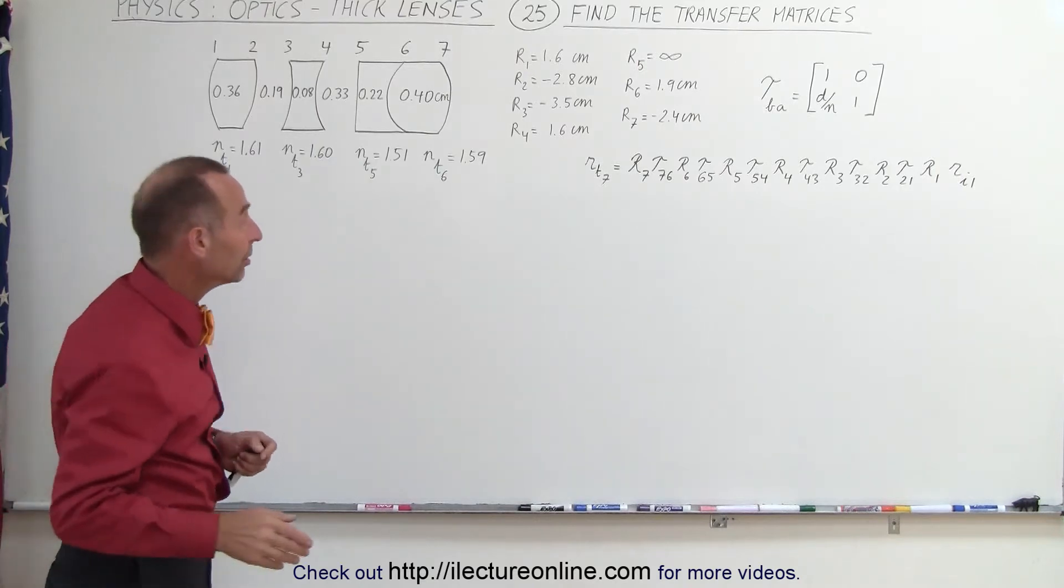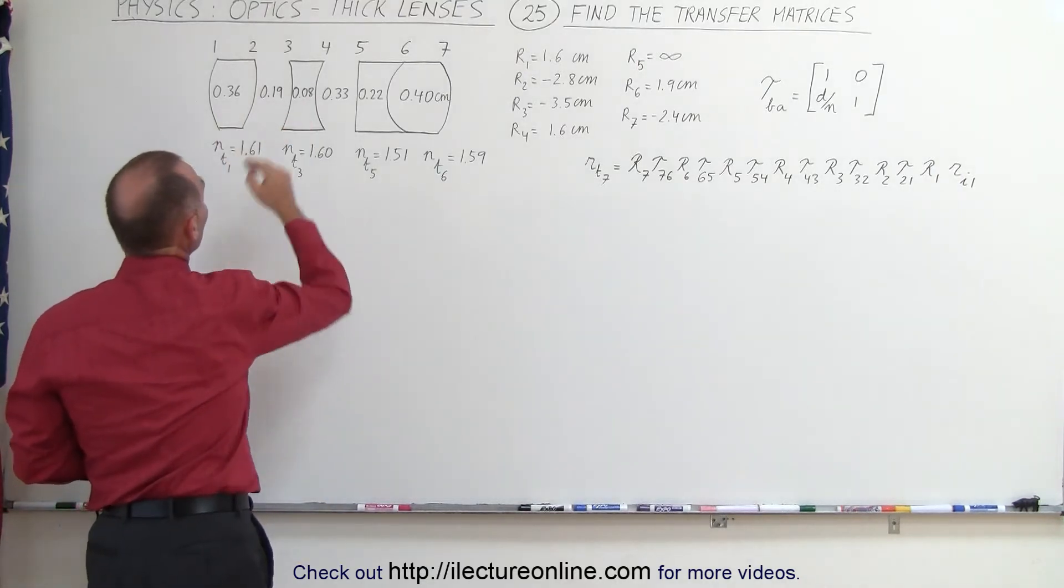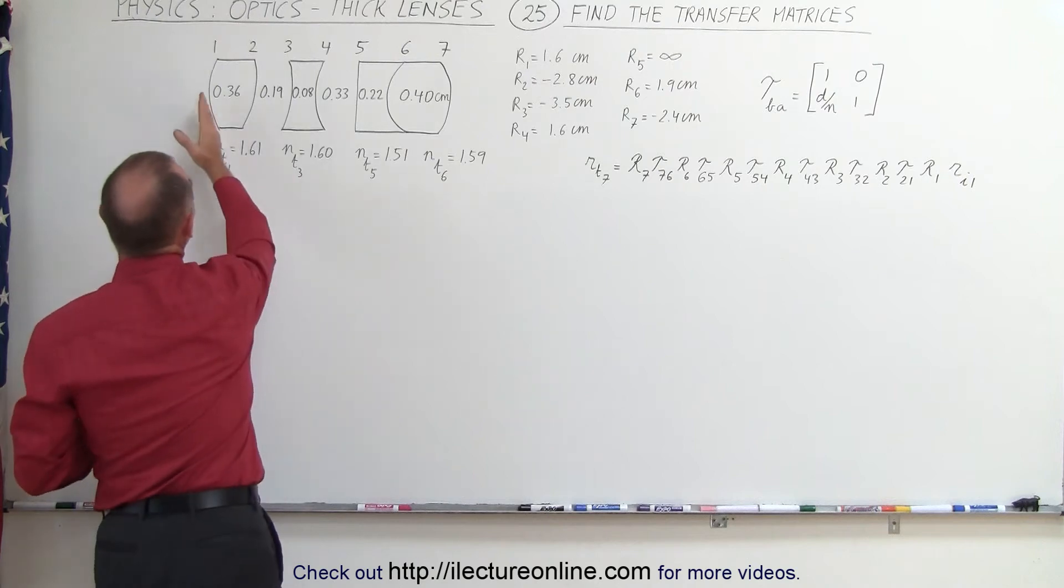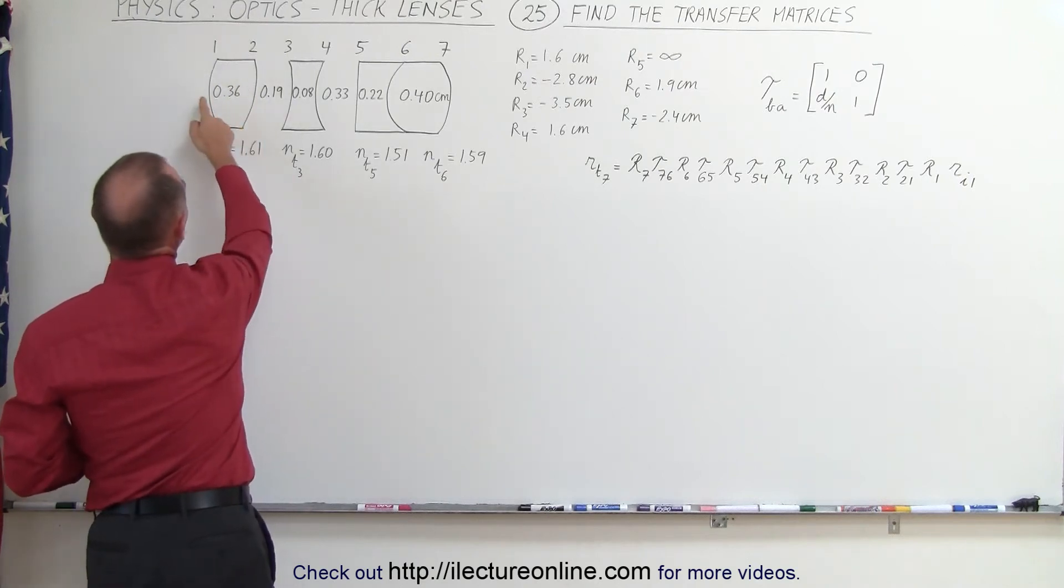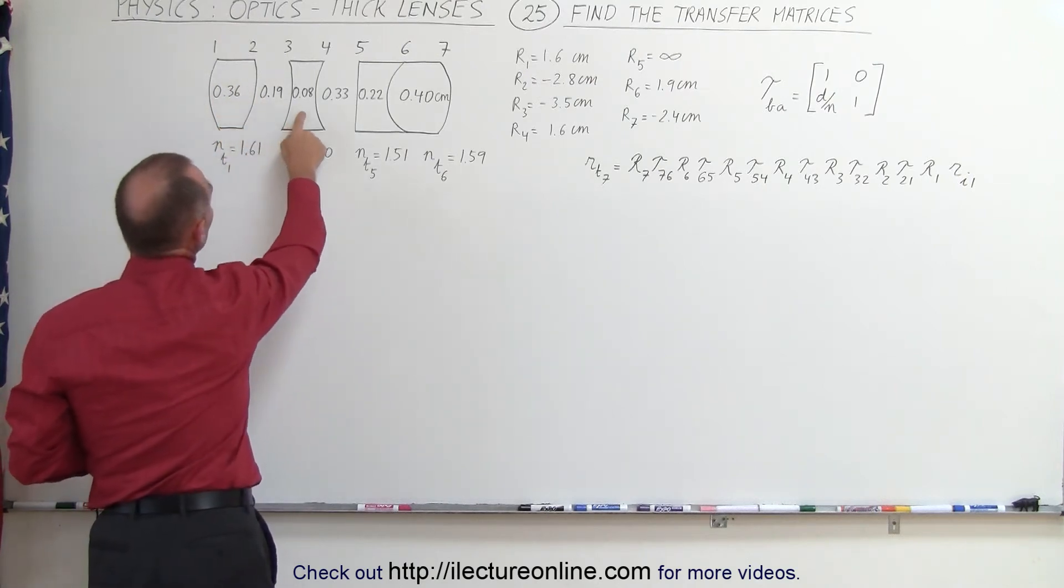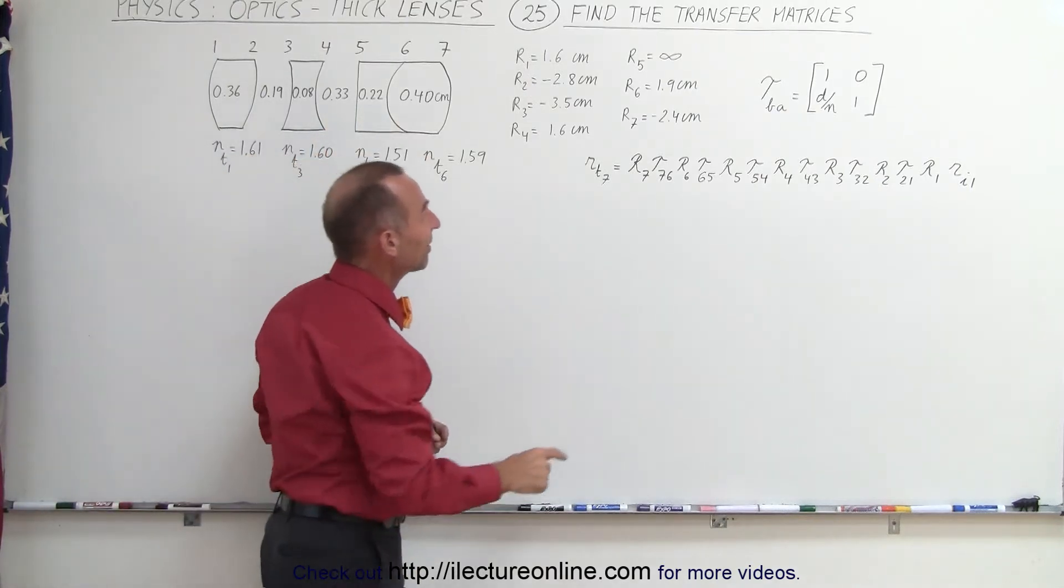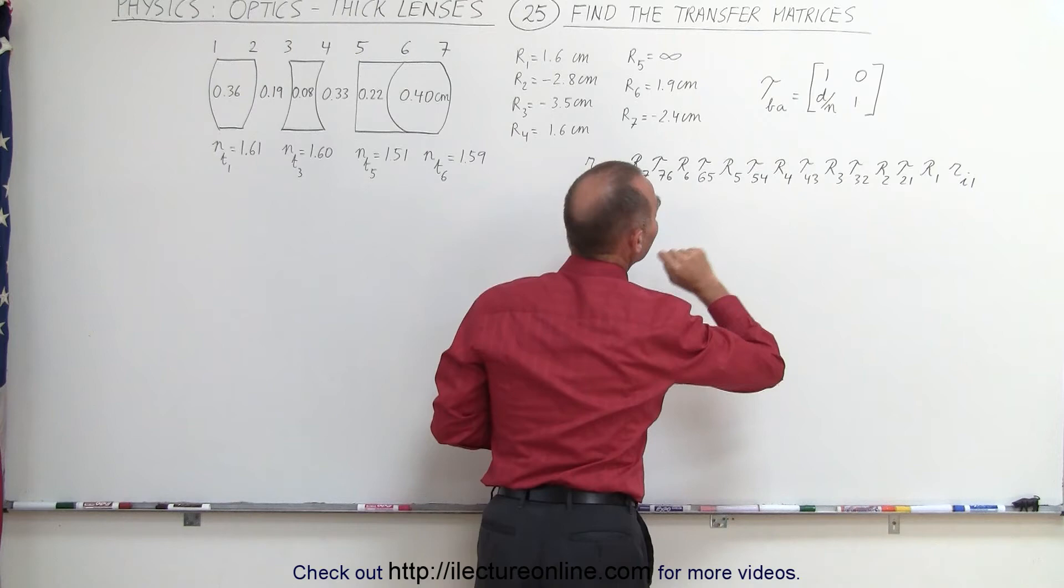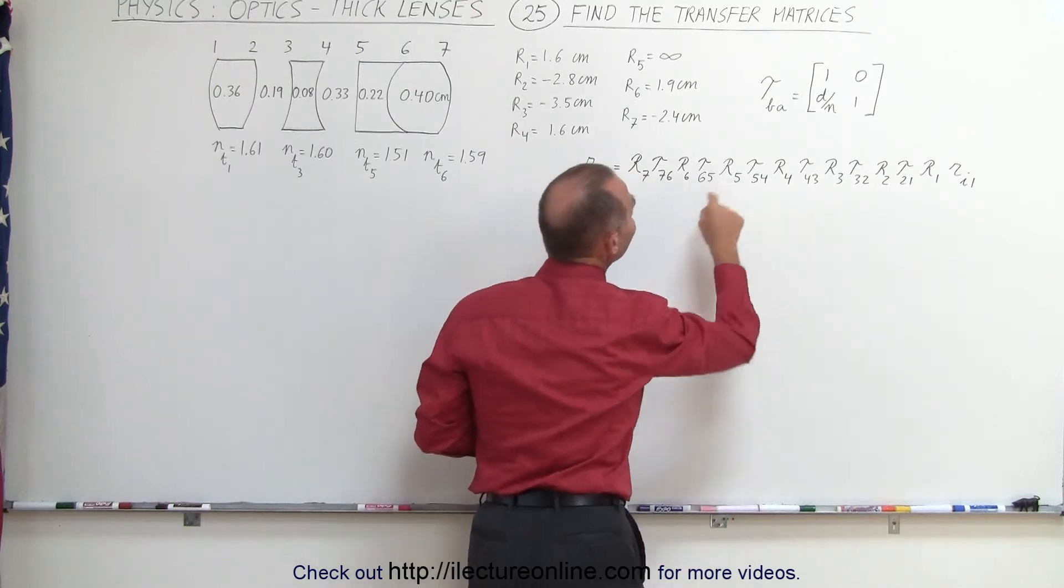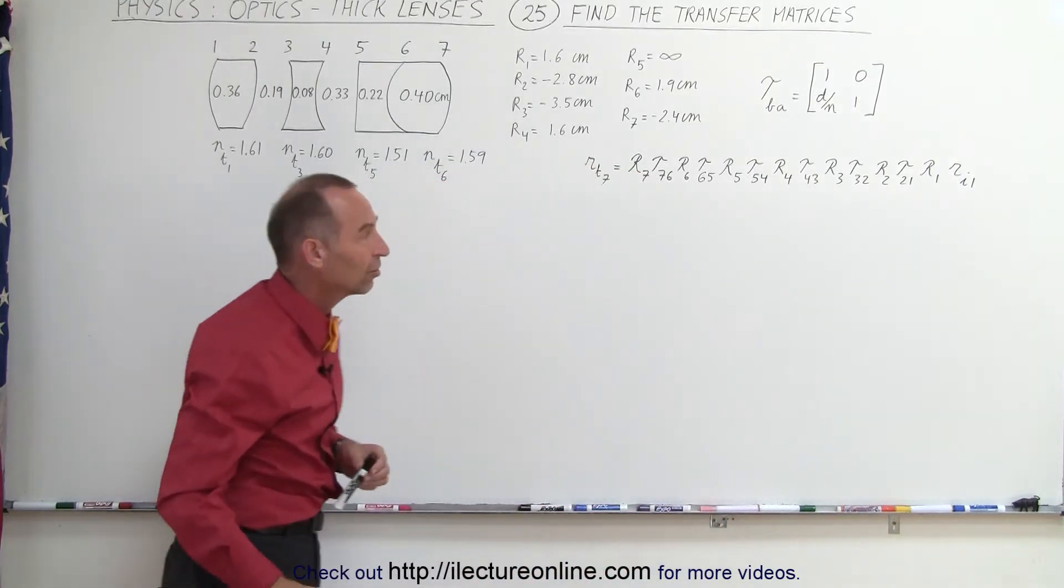How many transform matrices are there? Well, there are seven boundaries. And there are six distances to be covered. From 1 to 2, that's 1, 2, 3, 4, 5, and 6. So we need seven refracting matrices, and we need six transfer matrices.